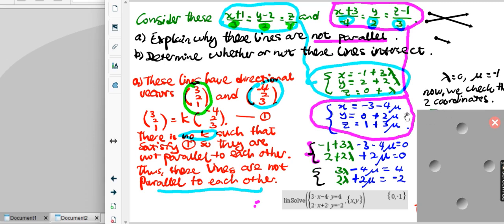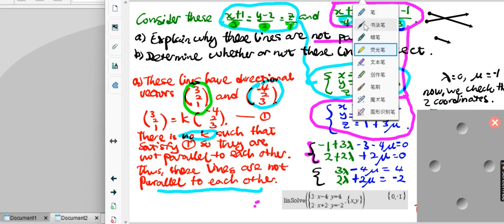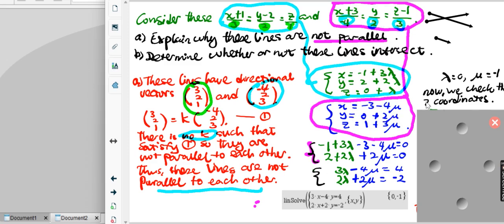Since we used x and y, we need to check the z coordinate to see if there's actually an intersection. If z doesn't match, these lines are skewed—they don't meet. If z matches, there is an intersection. Let's check.